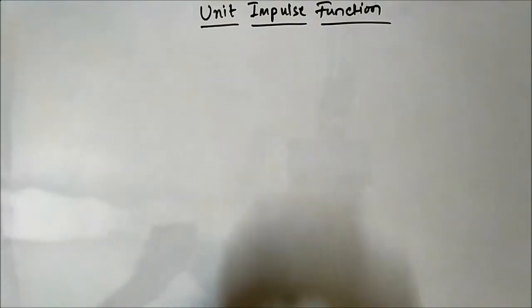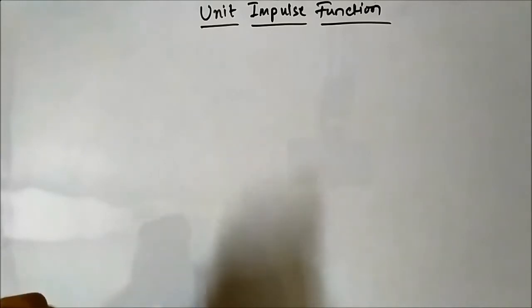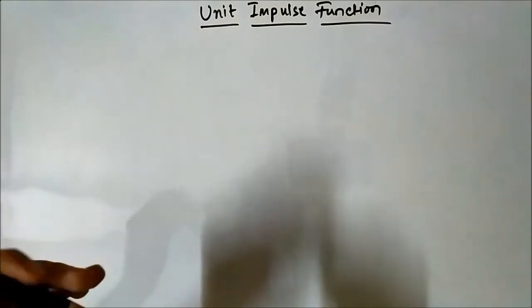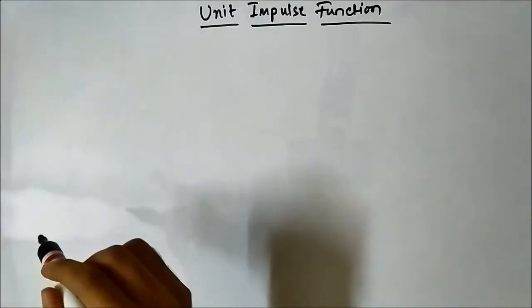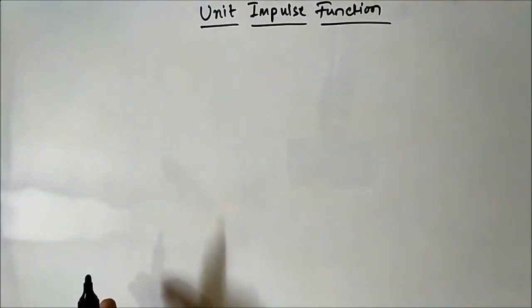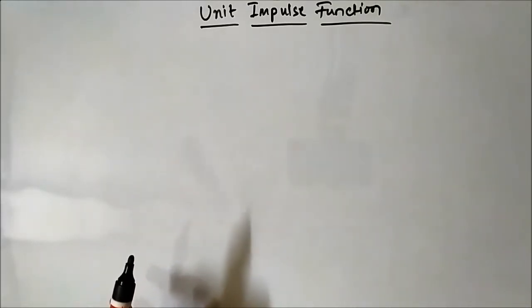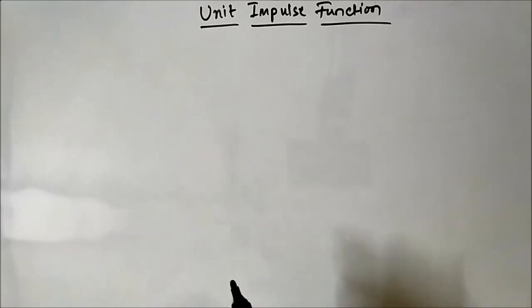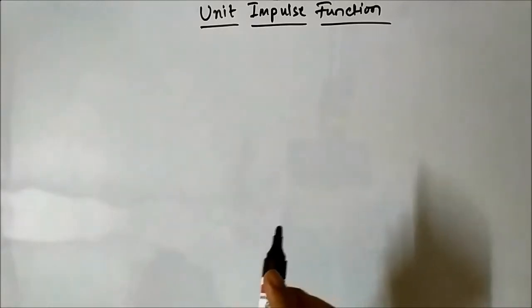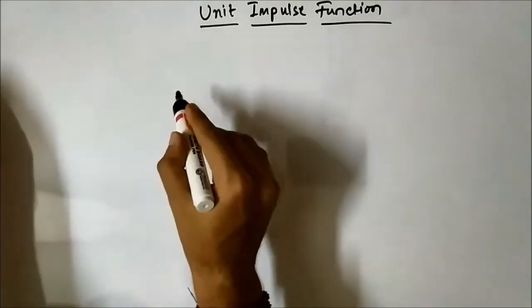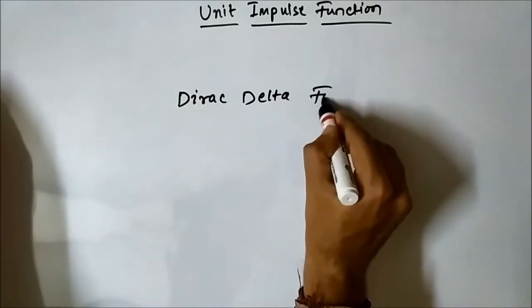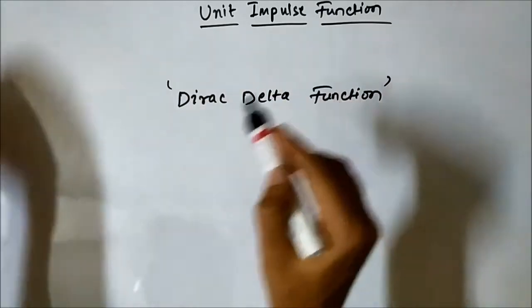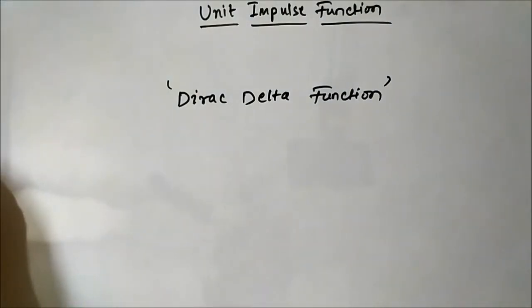Hello friends, welcome to Engineering Tutorial. In today's video we are going to discuss about another elementary signal used in the analysis of analog or digital systems. Today we are going to discuss about the unit impulse function, which is also called the Dirac Delta function. The impulse function is the most important signal used in the analysis of signals and systems.